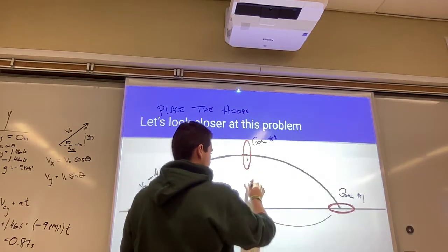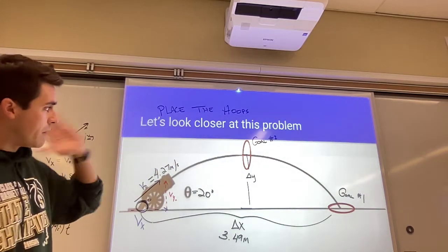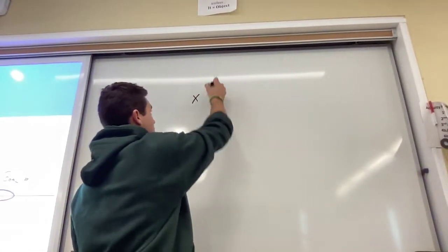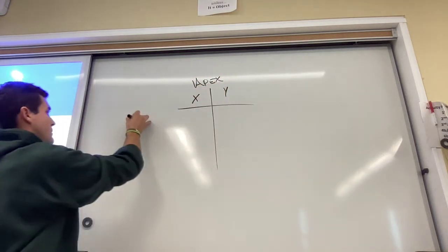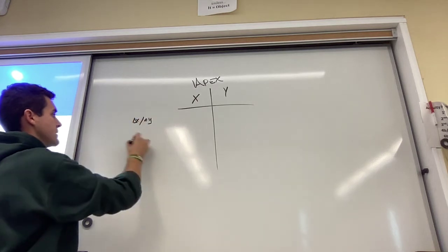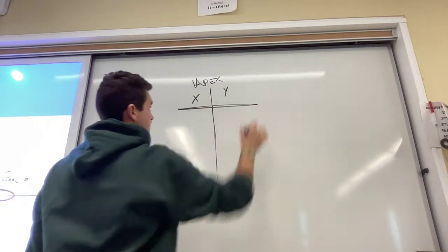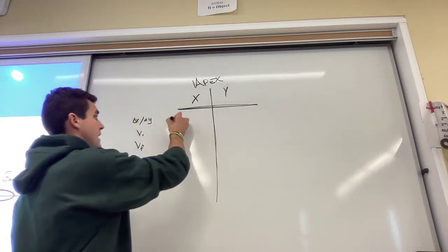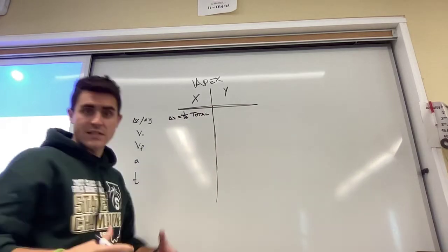Goal 2 asks: where is the apex? What is the height at the apex so I can place my ring there? I'll set up new x and y variables because I'm solving for the apex — only half the trip. My delta x to the apex is going to be equal to one half the total range.